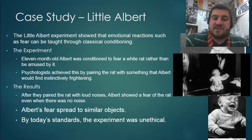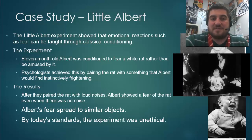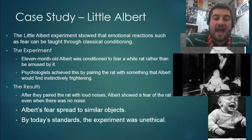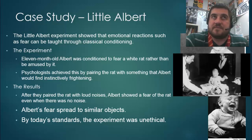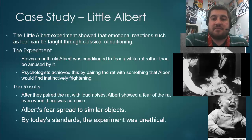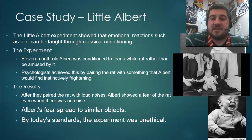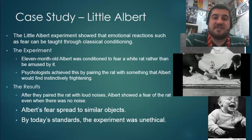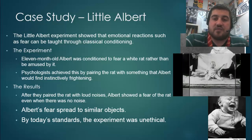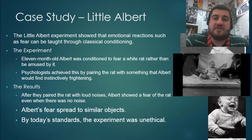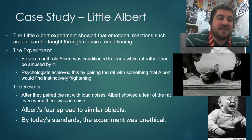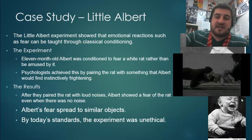Eleven-month-old Albert was conditioned to fear a white rat rather than be amused by it. They did this by pairing the rat with something Albert would find instinctively frightening. They would bring out the rat and then bang a bar on a pole to make a loud sound. Eventually, after enough pairings, whenever Albert saw the rat he would instinctively start crying because he associated it with something scary. Albert's fear even spread to similar objects — a white fur coat, and a rat-like white mouse mask — showing that classical conditioning is possible.